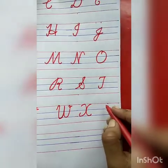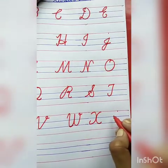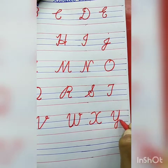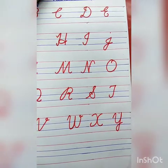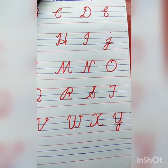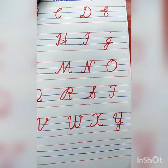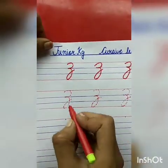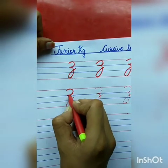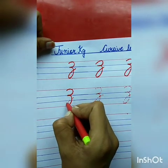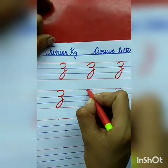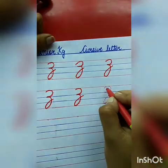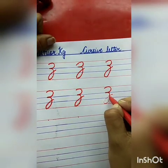Now tell me the next letter after X. Y — very good! Curve, slanting line, curve line. Y for yacht. The spelling of yacht: Y-A-C-H-T, yacht. Now tell me the next letter. Z for zebra. Speak with me: semicircle, slanting line, curve line. Z for zebra. Z for zebra — very good! Again, speak with me: Z for zebra.